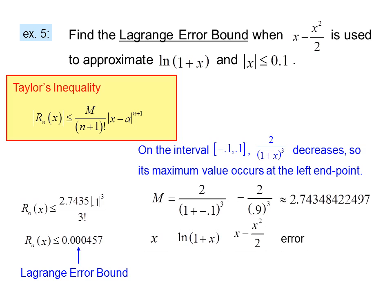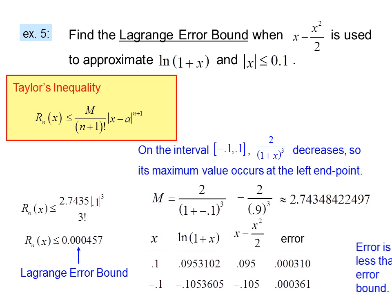We check our work. If x = 0.1, the calculator gives ln(1.1) = 0.0953102, and our approximation is 0.095, so the error is 0.000310. At the other end, if x = -0.1, the calculator gives -0.1053605, our approximation is -0.105, and our error is 0.000361. The error is less than the error bound, so the error bound gave us a good approximation of the maximum possible error.